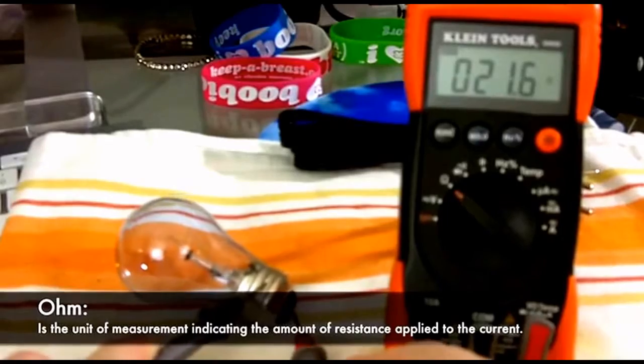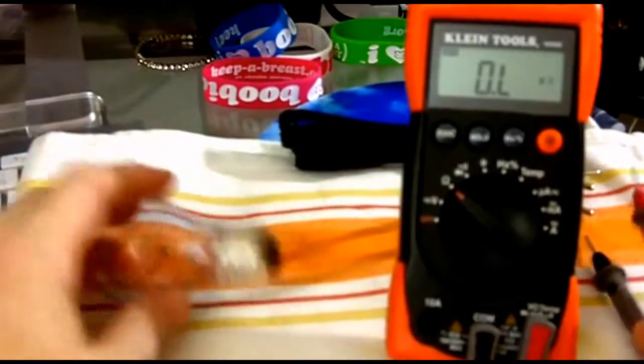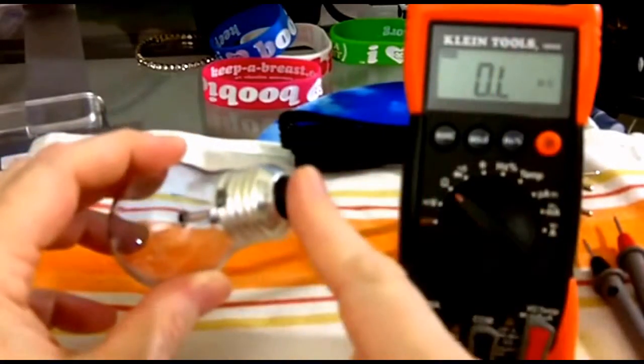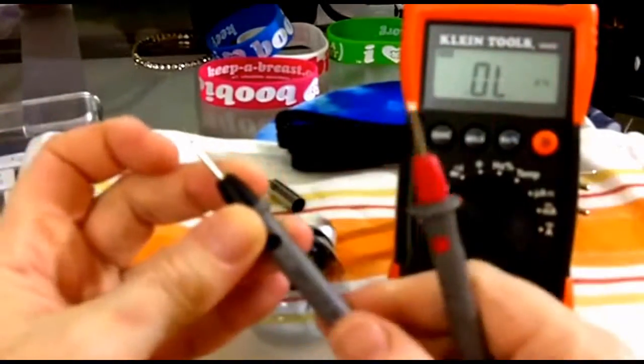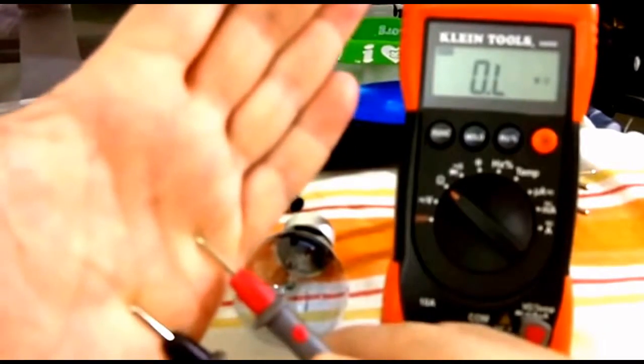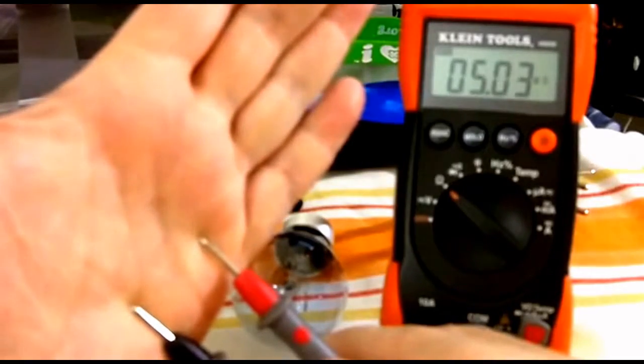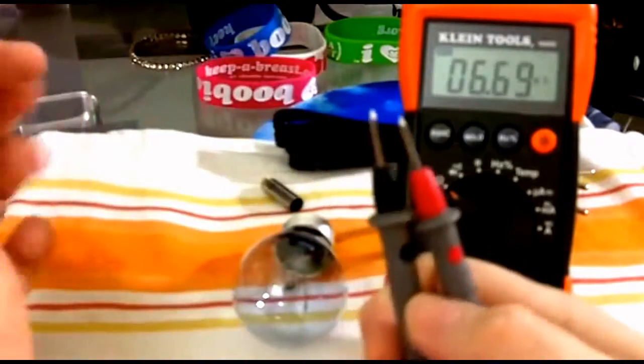So same principle. And we'll take a look at a 510 atomizer. Keeping in mind, threads are the black, post is the red. You can also just for larks check the resistance of your hand. Meaning that there is current that can flow through the body from one end to the other.